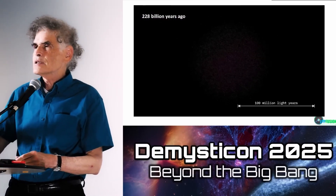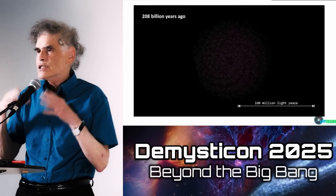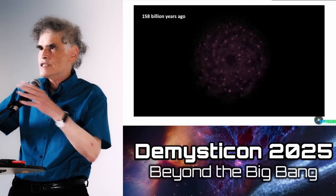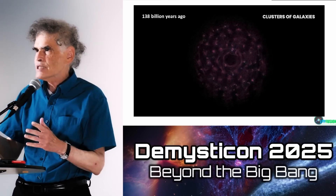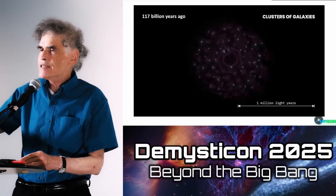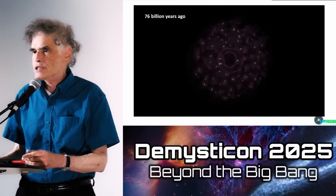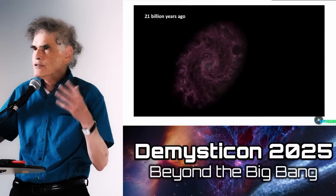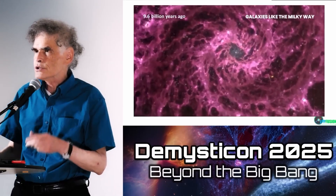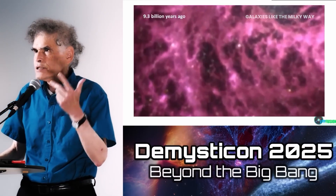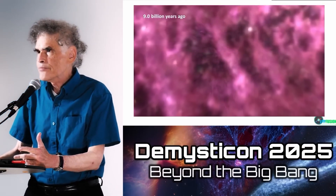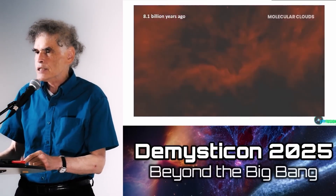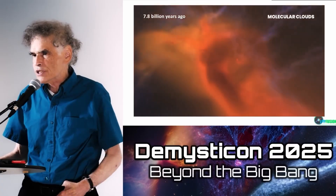This is important because for an object to collapse, it has to get rid of angular momentum — it has to transfer angular momentum out of the object. Magnetic fields can do this through these filaments that form at all scales. So we go down in scale from superclusters to clusters to galaxies to molecular clouds, always forming filaments at smaller and smaller scales, until we get to the scale of stars.